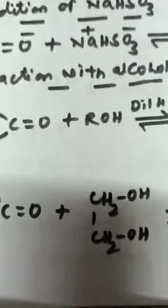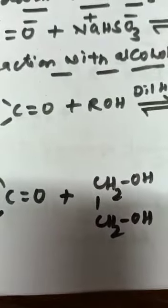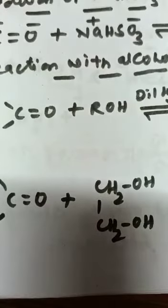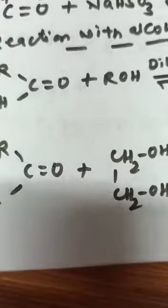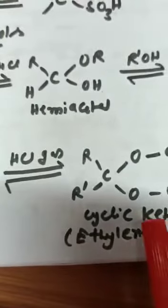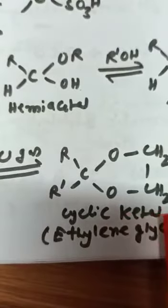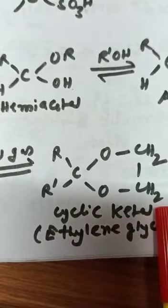In case of dihydric alcohol, like ethylene glycol, the aldehyde or ketone gives the cyclic ketal or cyclic acetal.